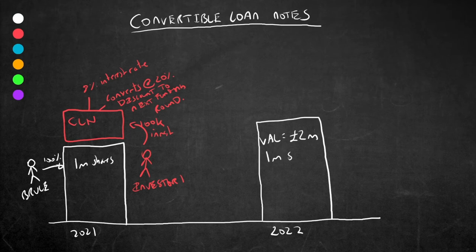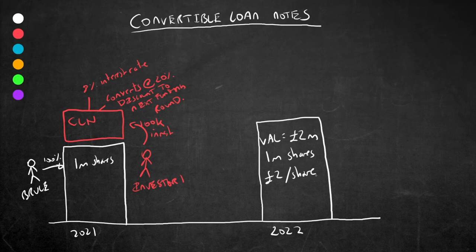There are still 1 million shares in issue, as before. No shares have been issued yet. And this makes the share price of the business 2 pounds per share. So that's 2 million pounds valuation divided by a million shares in issue, 2 pounds a share. Easy.